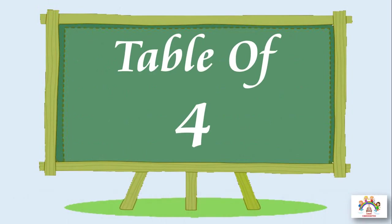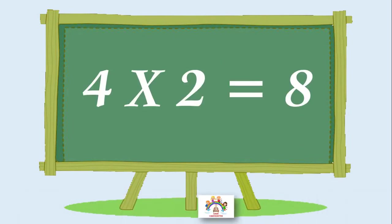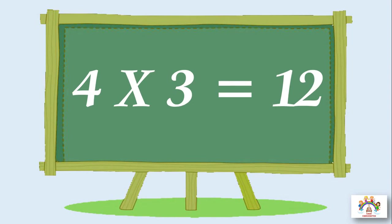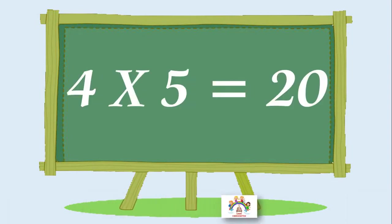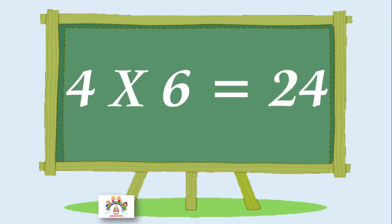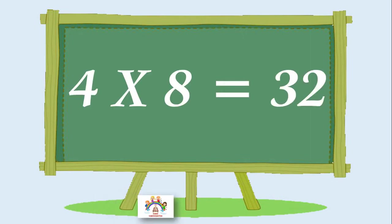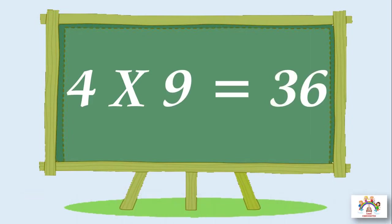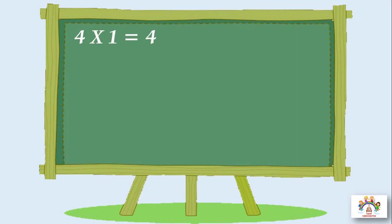Table of 4. 4 ones are 4, 4 ones are 4. 4 twos are 8, 4 twos are 8. 4 threes are 12, 4 threes are 12. 4 fours are 16, 4 fours are 16. 4 fives are 20, 4 fives are 20. 4 sixes are 24, 4 sixes are 24. 4 sevens are 28, 4 sevens are 28. 4 eights are 32, 4 eights are 32. 4 nines are 36, 4 nines are 36. 4 tens are 40, 4 tens are 40.